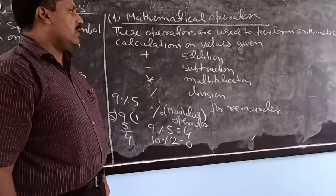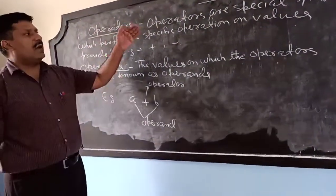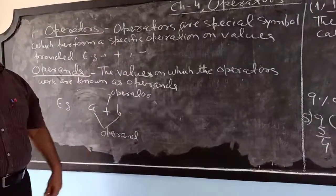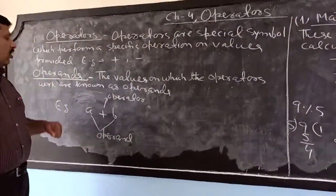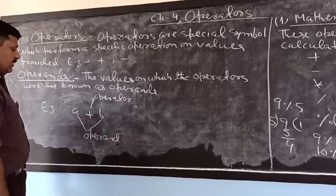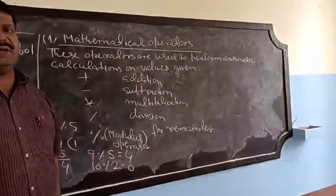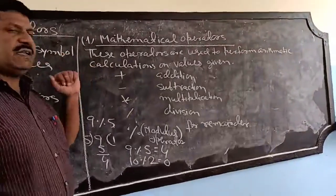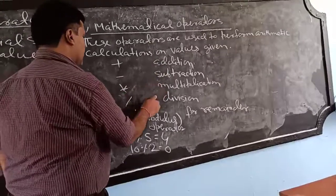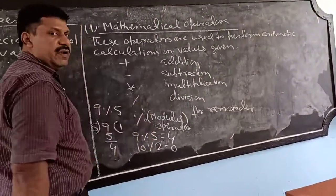Today we have finished mathematical operators. So in today's class, what have we learned? We started chapter 4 on operators. Operators are special symbols which perform a specific operation on values provided — like plus, minus, greater than, less than. Operands are the values on which operators work, like in a plus b, a and b are operands and plus is the operator. Mathematical operators are used to perform only arithmetic calculations: plus for addition, minus for subtraction, asterisk for multiplication, slash for division, and the percent sign is the modulus operator used for finding the remainder.